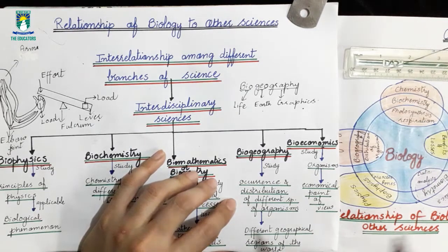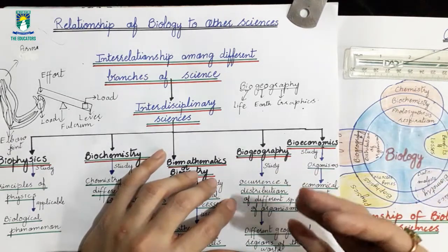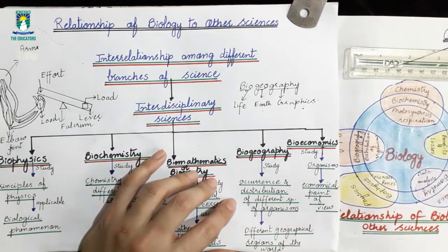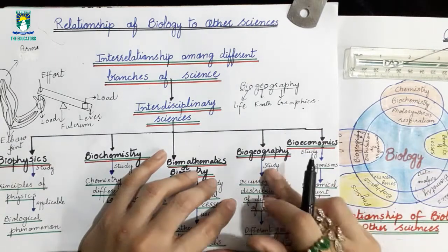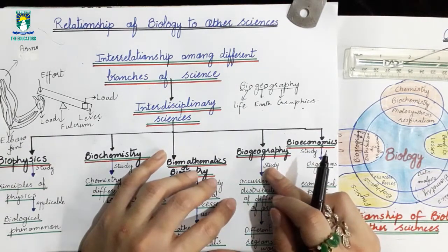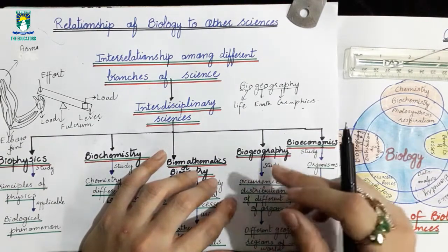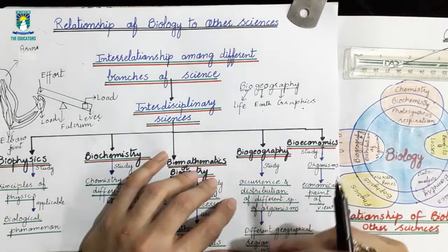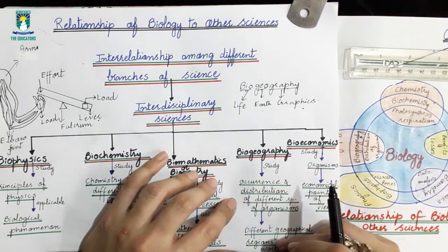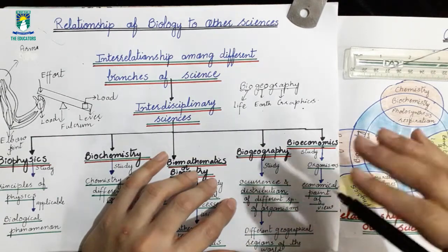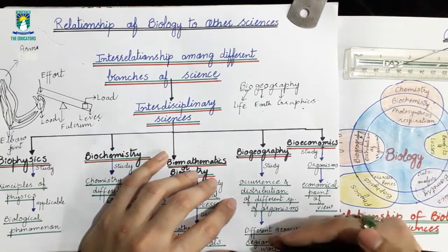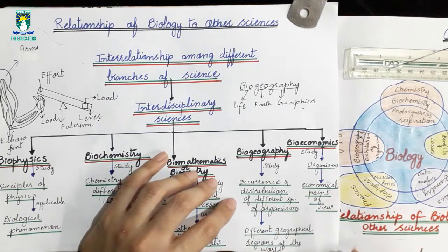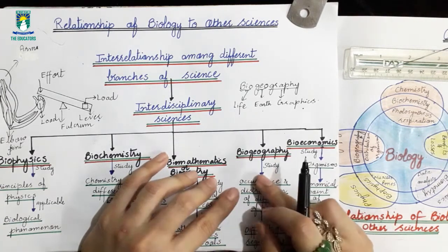Different living organisms — like plants and animals — are distributed in different geographical regions of the world, and this study is called Biogeography. For example, polar bears live in polar regions, and cactus plants are usually found in dry areas or deserts. These are examples of Biogeography.